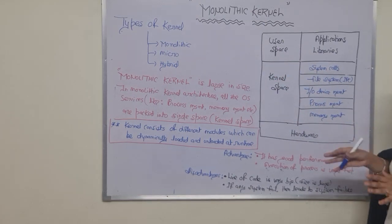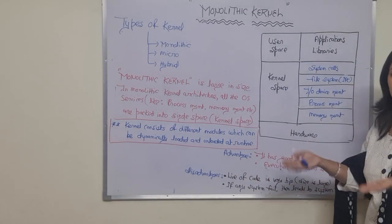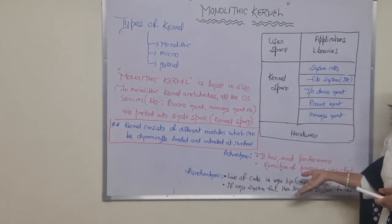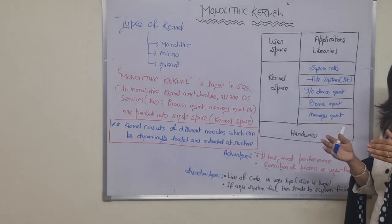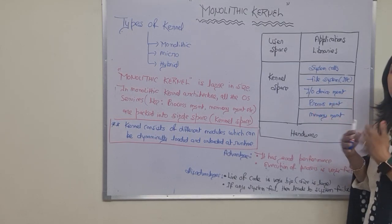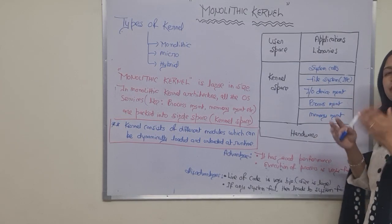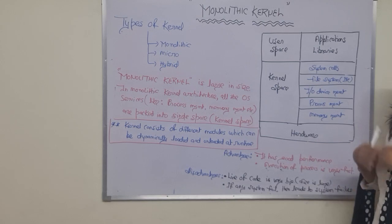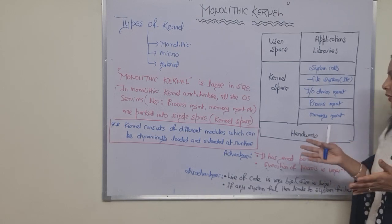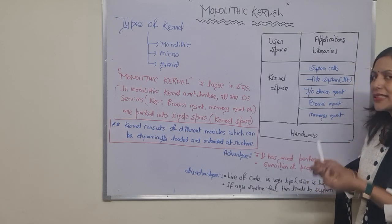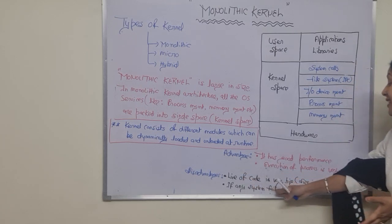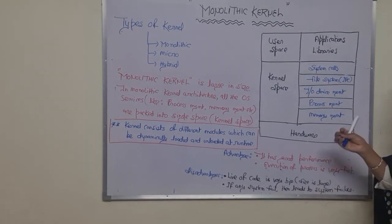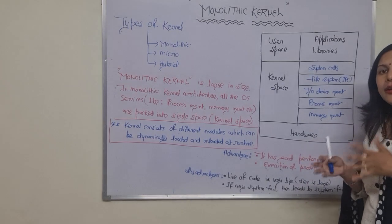There are also some disadvantages. The lines of code are very large because every function is in the kernel space, making the program quite complicated and large in size. Another disadvantage is that if any process fails, it leads to a complete system failure.